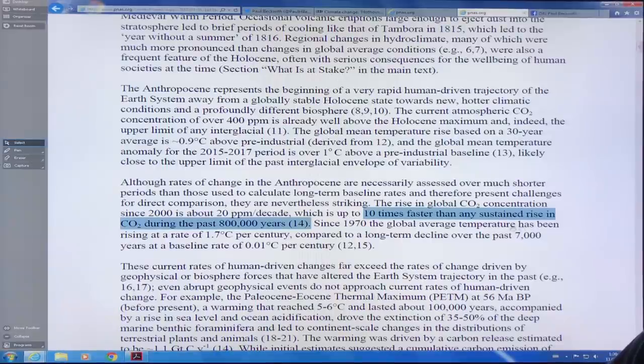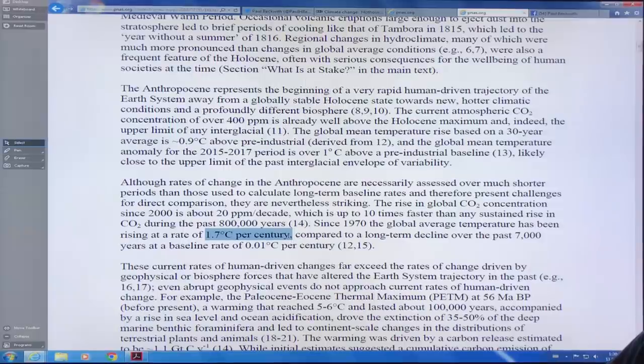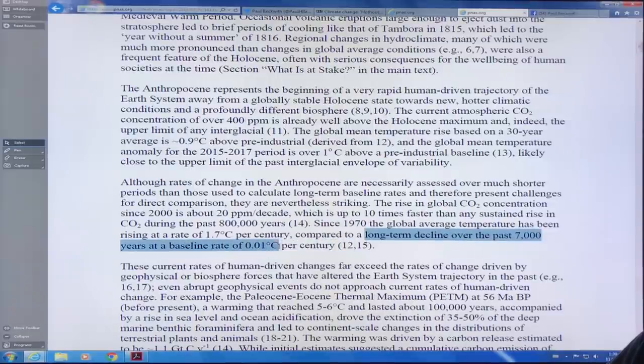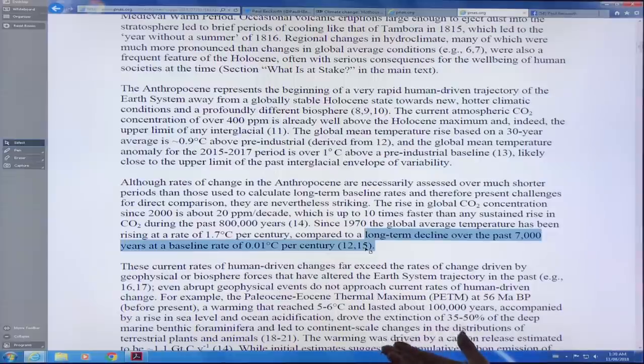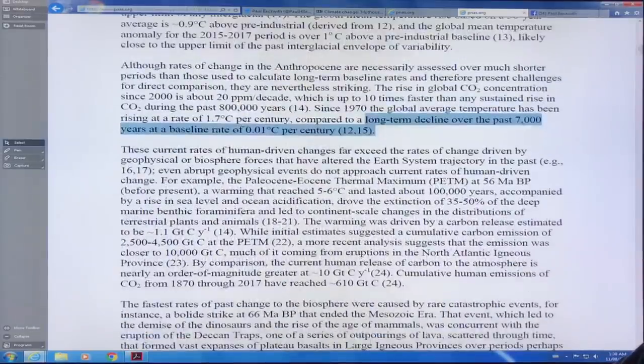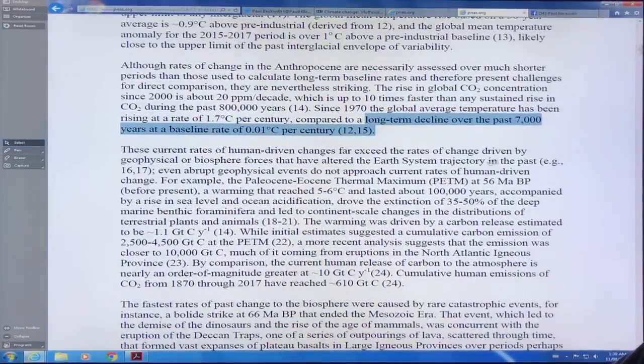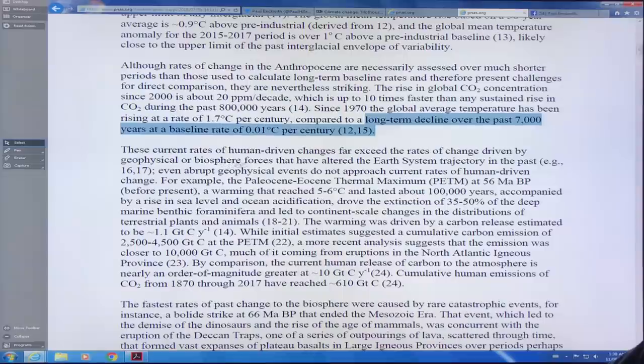Since 1970, the global average temperature has been rising at a rate of 1.7 Celsius per century. You need to compare that to a long term decline over the past 7,000 years at a baseline rate of 0.01 degrees Celsius per century. Because of the orbital characteristics of the Earth, we should be in a cooling period, but we're swamping that with our emissions. These human driven changes far exceed the rates of change of anything in the past.